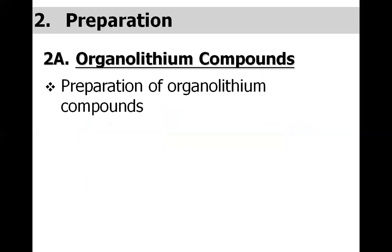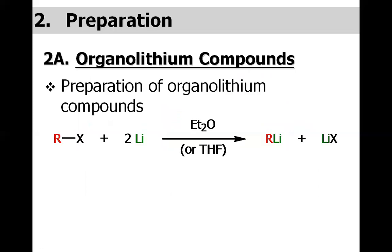Let us discuss the preparation, first for organolithium compounds. Alkyl halides when treated with lithium in ether, we may have the organolithium compound formed. Ether is chosen because it is an inert solvent and the alkyl lithium that has just been formed will not interact with the ether. If it were ethanol, the alkyl lithium would immediately attack ethanol to give ethane. So we have to choose a solvent which is non-interacting with the prepared organometallic compound.